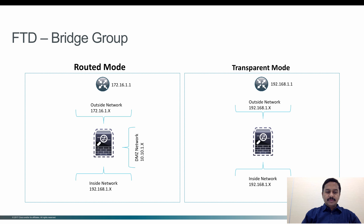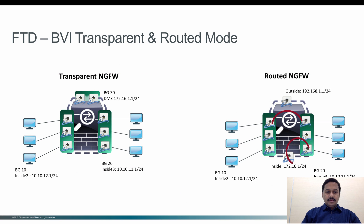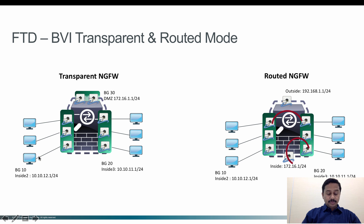Now let's see the difference between having a bridge group in routed mode versus transparent firewall mode. In the transparent firewall we have three bridge groups: bridge group 10, bridge group 20, and bridge group 30, each with its own IP network segment. Within bridge group 10, clients can communicate between each member interface provided you have an access control policy. However, in transparent firewall mode, traffic between bridge groups is not supported. To send traffic from a client in bridge group 10 to bridge group 20, you need an external routing device.